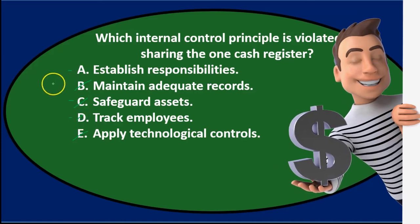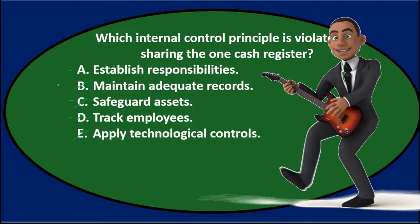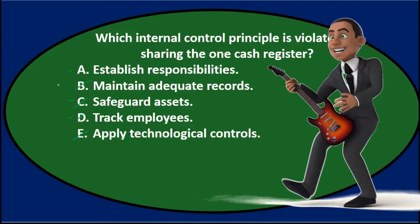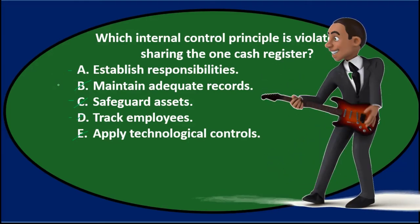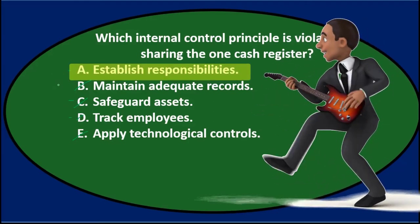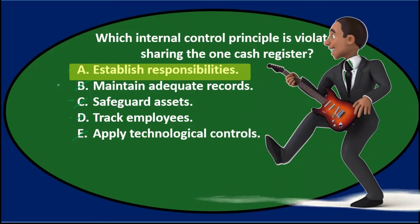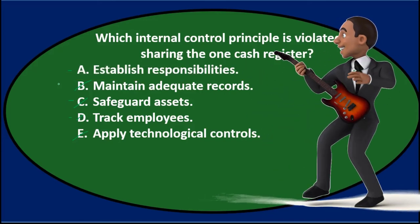So the answer is A, establishing responsibility. Which internal control principle is violated by sharing one cash register? A, establish responsibility.